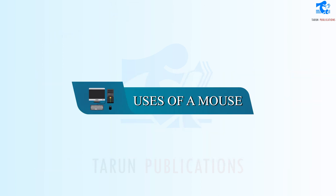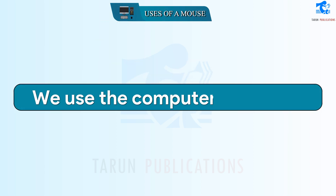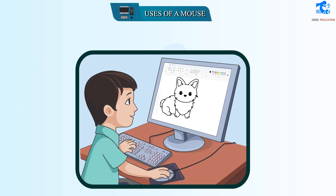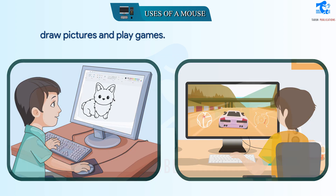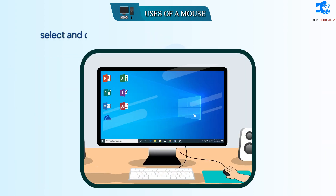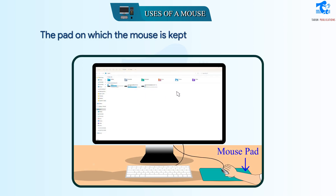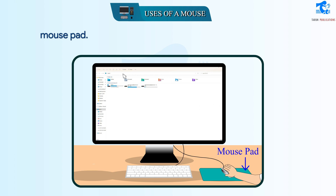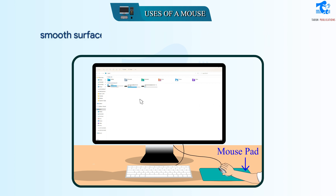Uses of a Mouse. We use the computer mouse to draw pictures and play games, and to select and open items on the screen. The pad on which the mouse is kept and moved is called the Mouse Pad. It is used to protect the mouse from dust and for a smooth surface.